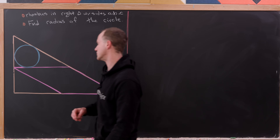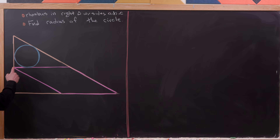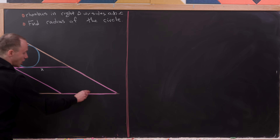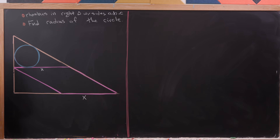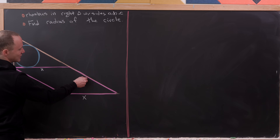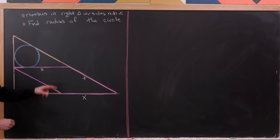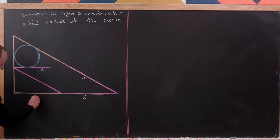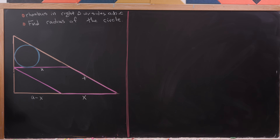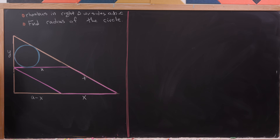I'll say the side length of the rhombus is X. That means this length is X, and all sides of the rhombus are also X. Since the base is length A, the remaining piece of the base is A minus X. And for the upper triangle, the leftover segment along the altitude from the top of the rhombus to the apex is length Y, which makes the lower portion of the altitude B minus Y.